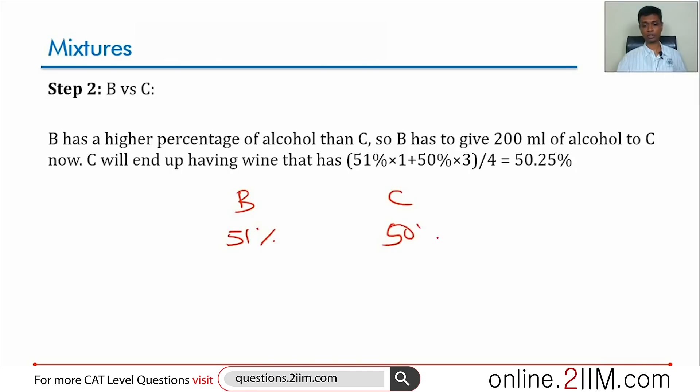Now B has 51% alcohol, C has 50% alcohol. From here 200 ml goes here, this already has 600 ml. Mixing these two in the ratio 1 is to 3, so C will now have 50.25% alcohol.